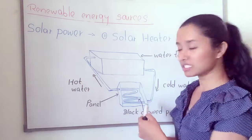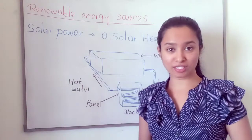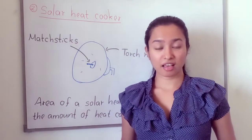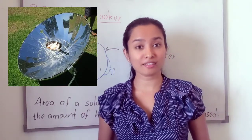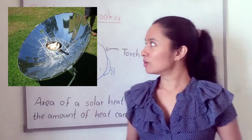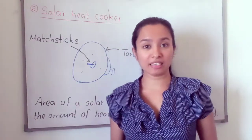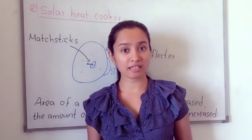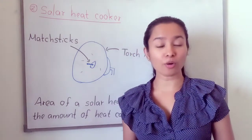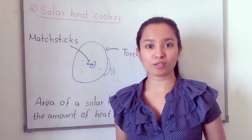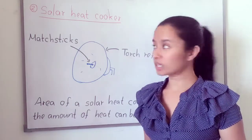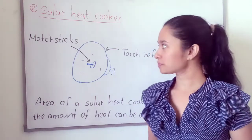Water continuously gets heated and we can take hot water using this solar heater. We also have the solar heat cooker, which you may know from our previous lesson. Normally we use biomass or electricity for cooking, but we can also use solar power for cooking using a solar heat cooker.